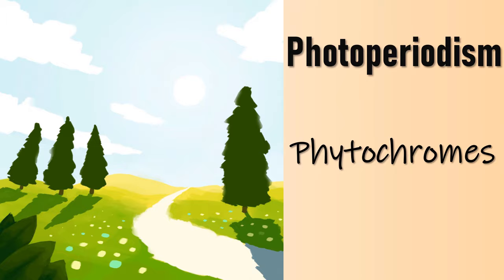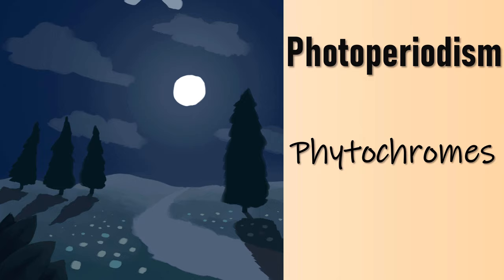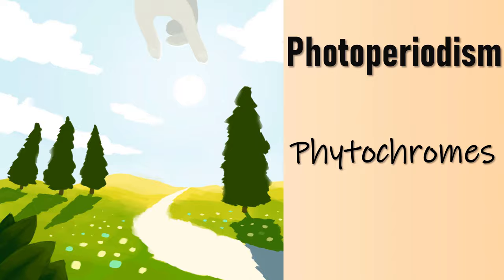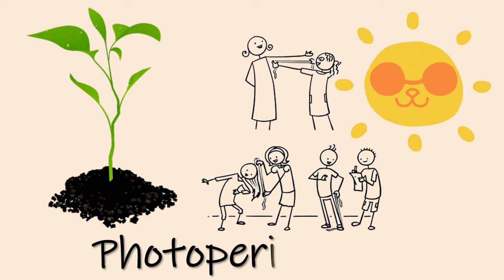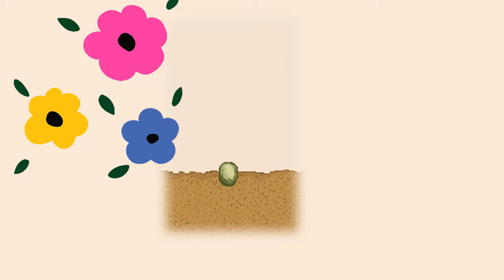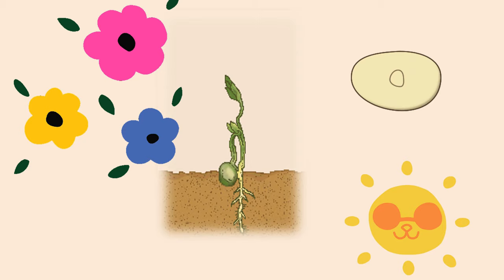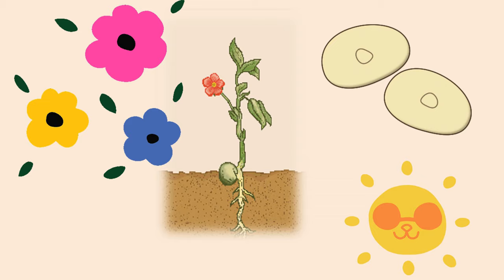We know that plants are living and can respond to sunlight. Photoperiod is the period of time each day during which an organism receives illumination — that is simply the day length. The ability of plants to measure the length of photoperiods is known as photoperiodism. Flowering, seed germination, asexual reproduction, and seed dormancy in plants are triggered by the photoperiod of a certain length, called the critical day length.